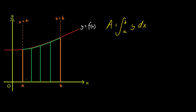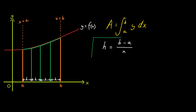We're going to start off by naming the width of these trapeziums H. So each trapezium has width H. The formula for H is the length B minus the length A divided by the number of trapeziums. This formula will have to be used alongside the trapezium rule formula to find approximate areas underneath curves.